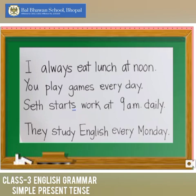We also use the present tense to talk about habits and routines — things and actions that happen regularly. Let's look at the examples. 'I always eat lunch at noon.' You will notice I use the word 'always' because I am talking about something I do regularly — that is, eat lunch at noon. So I use the simple present tense, and here the verb is 'eat.'